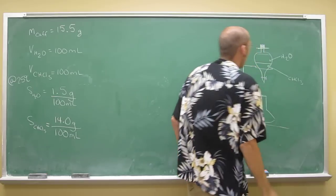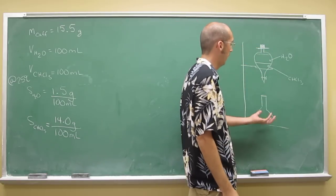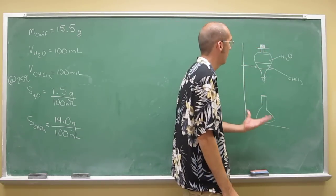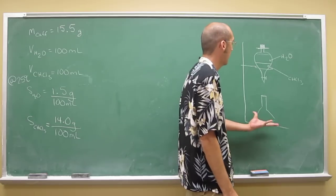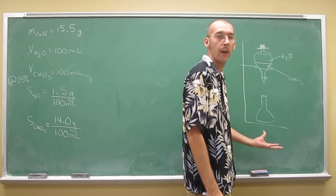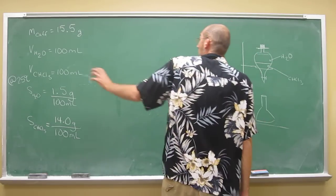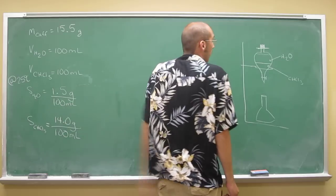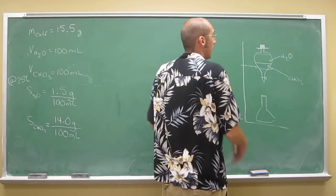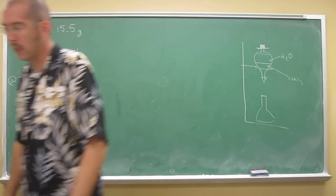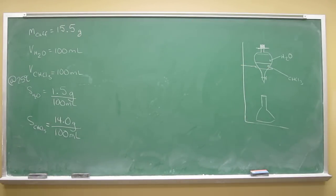What you'll find is if you took all the chloroform out and evaporated it off, you'd find some amount of caffeine in there. But it wouldn't be the total amount that you put in—15.5 grams. If you took all the water out, then you'd find the rest of it. That's what's happening: it's partitioning between the two layers.